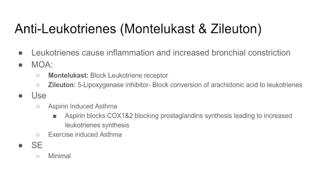Coming back to our discussion — the second way to decrease inflammation in asthma is by blocking leukotrienes. Leukotrienes cause inflammation and increase bronchoconstriction. There are two drugs: montelukast, which blocks the leukotriene receptors so leukotrienes are made but can't bind; and zileuton, which is a lipoxygenase inhibitor that blocks the conversion of arachidonic acid to leukotrienes. The difference in mechanism of action between these two drugs is important — exam questions will ask about this.